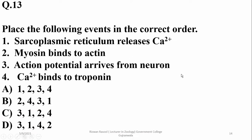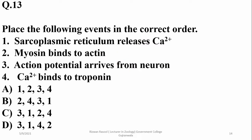Place the following events in correct order: first, an action potential arrives at the motor neuron; then the sarcoplasmic reticulum releases calcium after the stimulus of acetylcholine; next, calcium binds to troponin causing displacement of tropomyosin, exposing binding sites for myosin heads; finally, myosin binds to actin. Delta is the correct sequence.